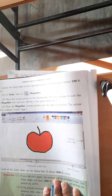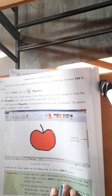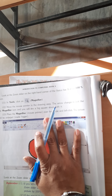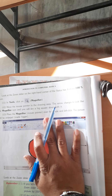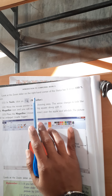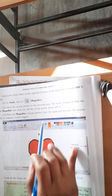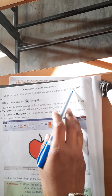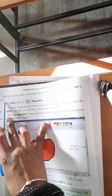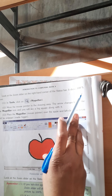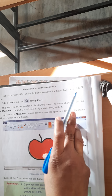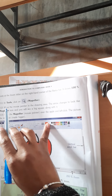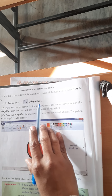Now look at page number 54. Look at the zoom slider on the right-hand corner of the status bar. It shows 100% zoom. You can see the zooming. In Tools, click on the Magnifier.